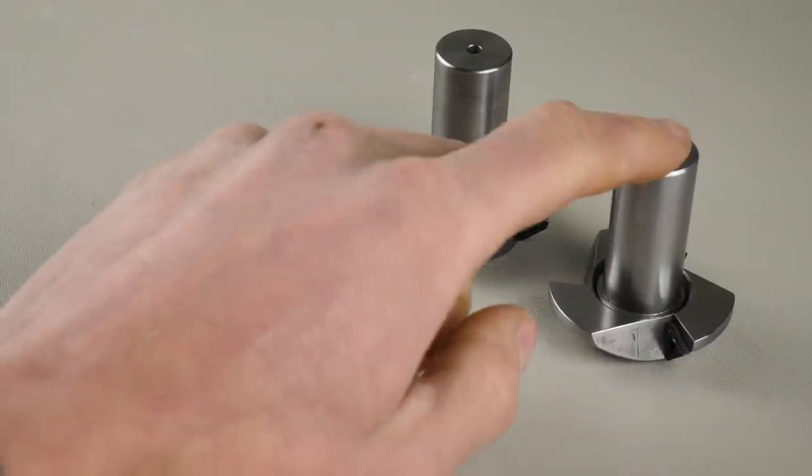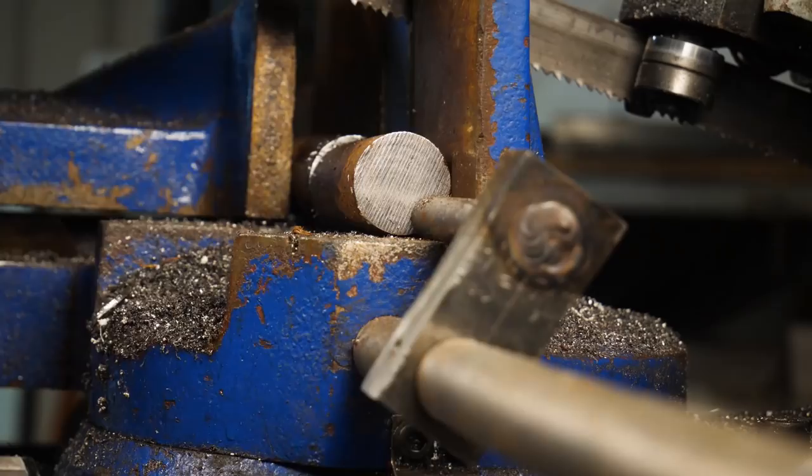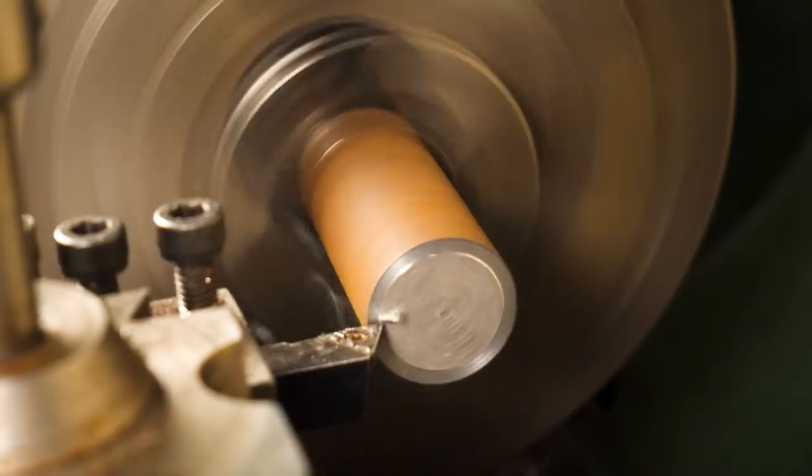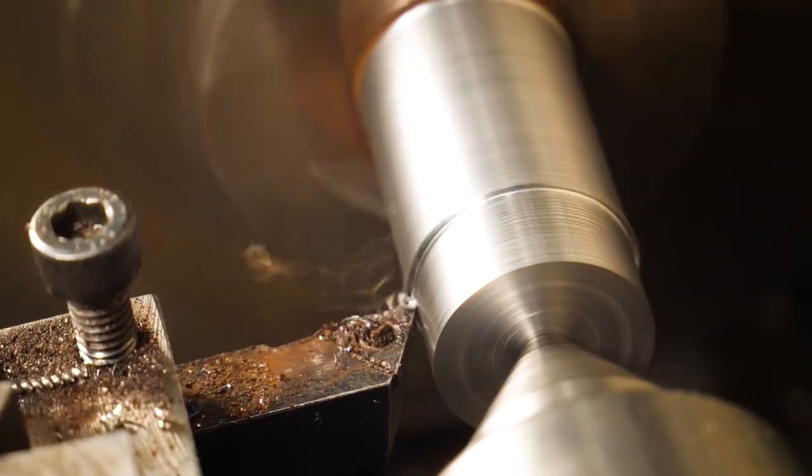We'll start with the arbor for what I'm calling the reversible style. I initially turn the shank down to the desired size, 20mm.